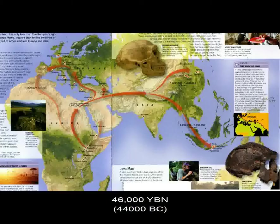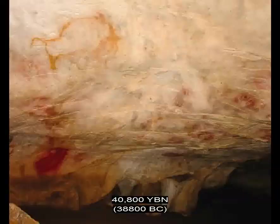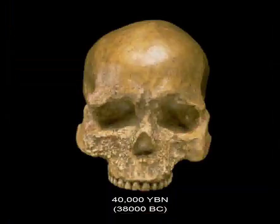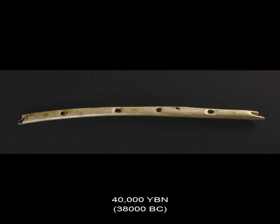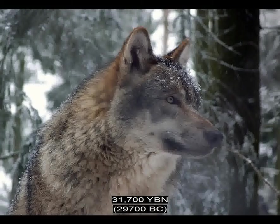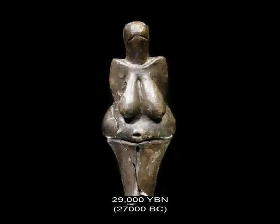Oldest Homo sapiens skull outside Africa — in Israel. Bow and arrows. Homo erectus extinct. Start of mass extinction of large mammals due in part to humans. Earliest watercraft. Sapiens reach Australia from Southeast Asia. Earliest mine. Painting. Earliest sapiens fossil in Europe. Oil lamp. Earliest musical instrument — a flute. Sapiens reach China. Weaving, textiles, and coloring dyes. Humans raise dogs. Earliest ceramic object — the Venus figurines. Neanderthals extinct.